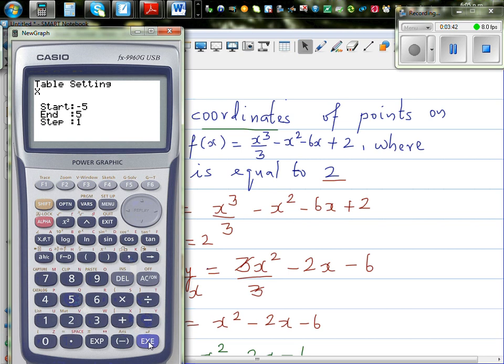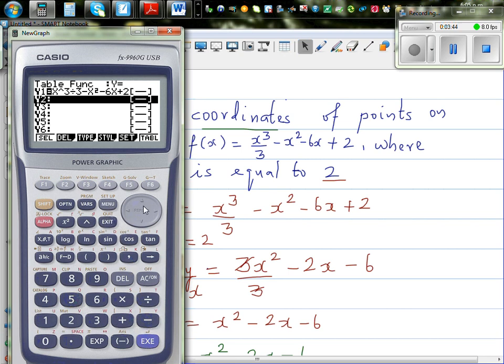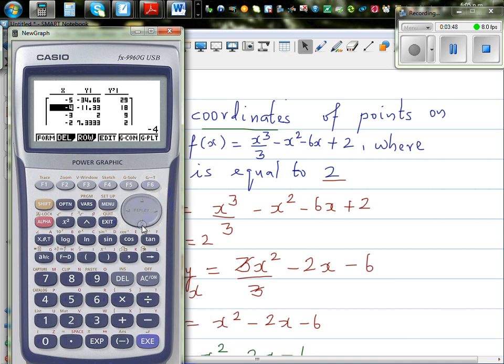So this will also confirm whether our answer is right. Go to table. Which were the points? You've got minus 2, at minus 2, it is 7 and 1 third.